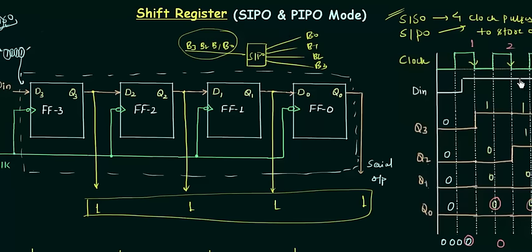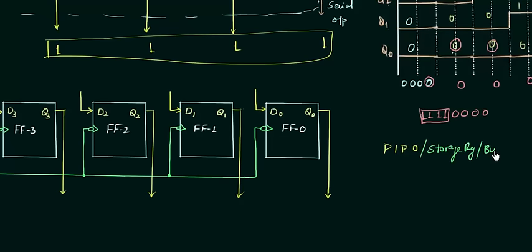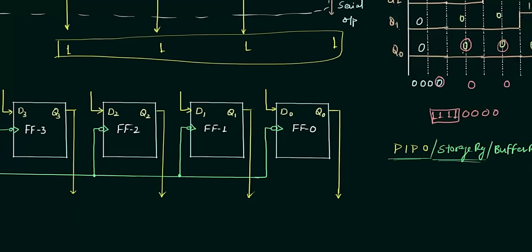Now we can move to parallel input parallel output mode. It is a very simple configuration in the shift register and one of the most basic things to know. I will call parallel input parallel output the storage register, and also the buffer register. Storage register is nothing but the parallel input parallel output shift register.